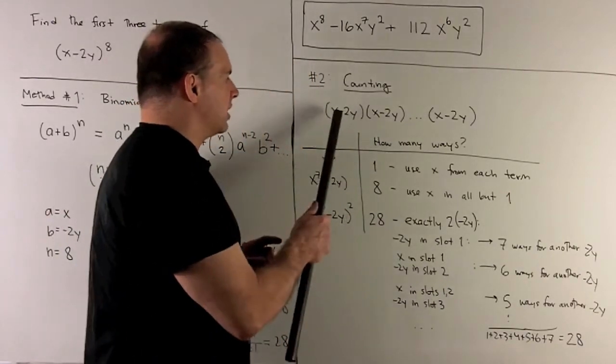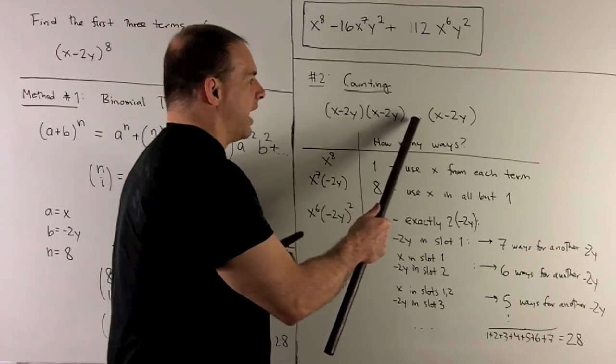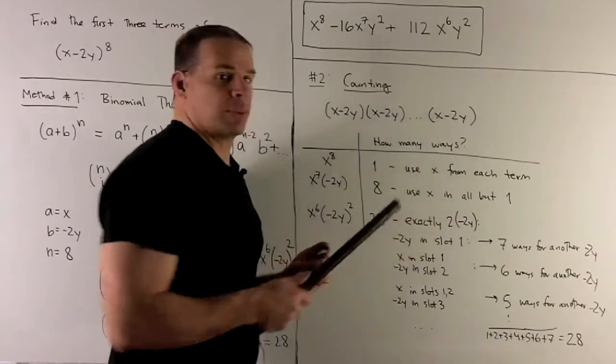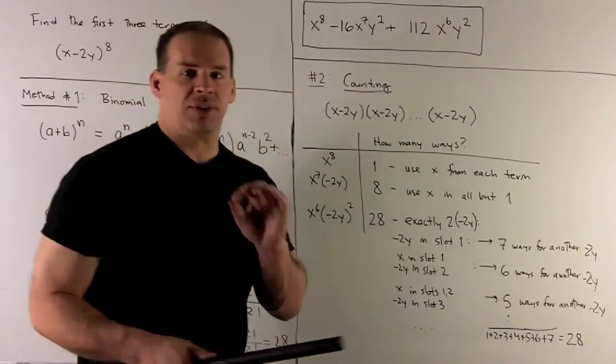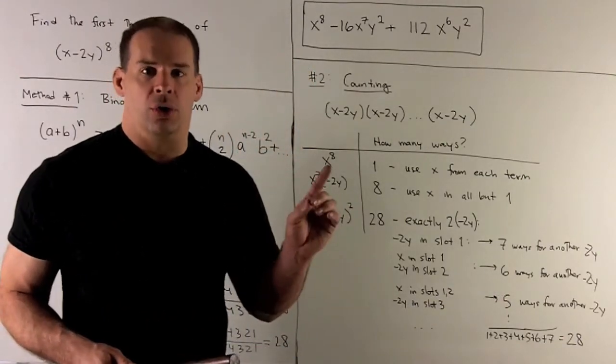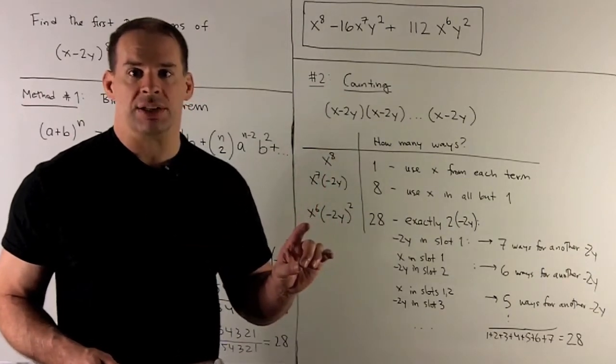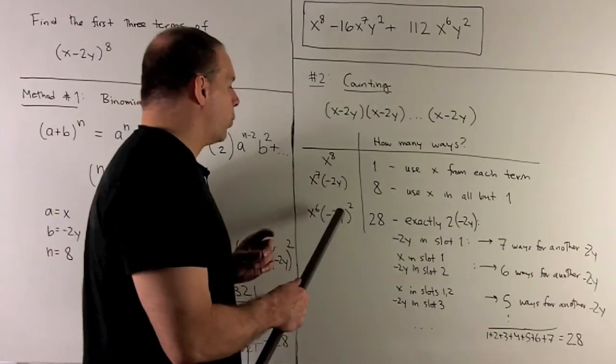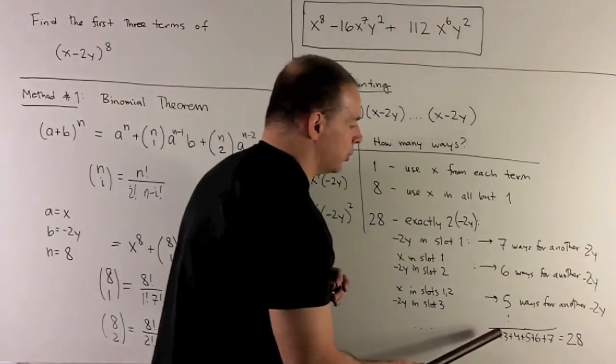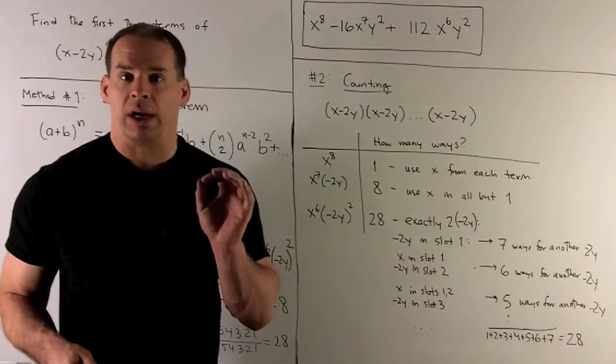How about if I put x here, x here, -2y in the next one? Then, we're only going to have five spots to put another -2y. So, we get a five. And then, as you follow that line of thinking out, you'll know you're going to take this all the way down to one as you consider all possibilities. So, the number of ways to get exactly 2 minus 2y, it's going to be 1 + 2 + 3 + 4 + 5 + 6 + 7, which equals 28.